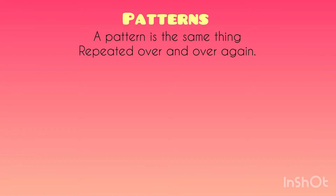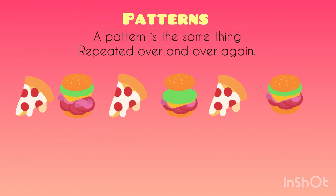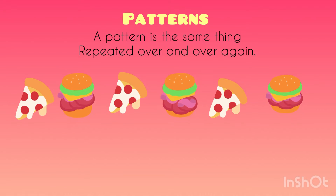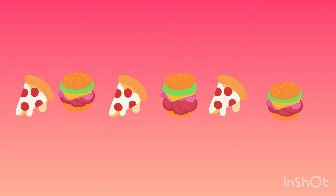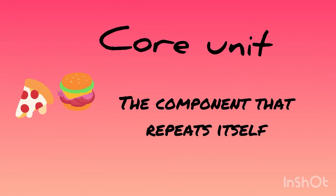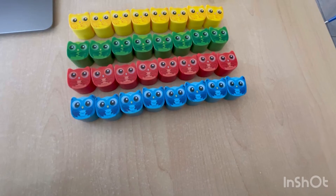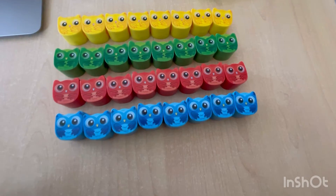We're going to look at another pattern: pizza, hamburger, pizza, hamburger, pizza, hamburger — what do you think will be next? Pizza, hamburger, right? Now pizza-hamburger is the core unit. It's the component that repeats itself over and over again.